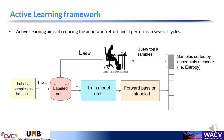Active learning aims at reducing the annotation effort and it performs in several cycles. At the beginning, the model is trained on the initial label set. Then this model is used to select a small set of samples via an acquisition function, which is the main difference between active learning methods. Then selected samples are queried to the oracle for labeling and added to the label set. This cycle is repeated until the annotation budget is exhausted.